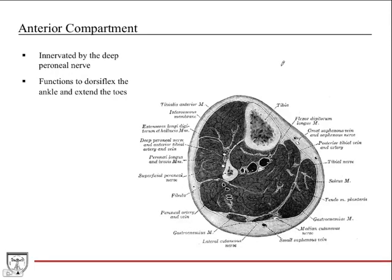There is the anterior compartment, located between the tibia and fibula with the interosseous membrane as a big divider between anterior and posterior. There is a lateral compartment containing the peroneus longus and brevis — a very small compartment with only two muscles. The posterior compartment is the large compartment. The anterior compartment is innervated by the deep peroneal nerve.